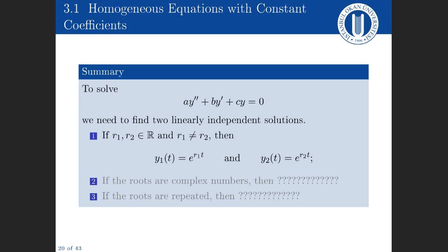To summarize: to solve a second-order linear homogeneous ODE with constant coefficients, we find two linearly independent solutions. In case one, when the two roots of the characteristic equation are different real numbers, the two solutions forming our fundamental set are e to the r1 t and e to the r2 t. Cases two and three we'll fill in as we learn.